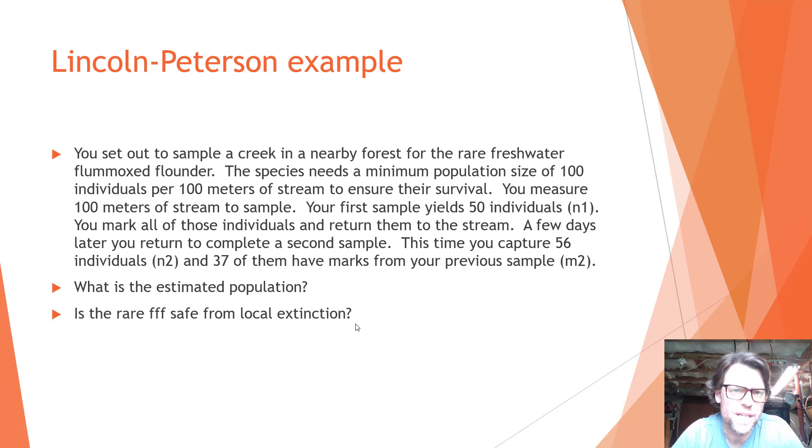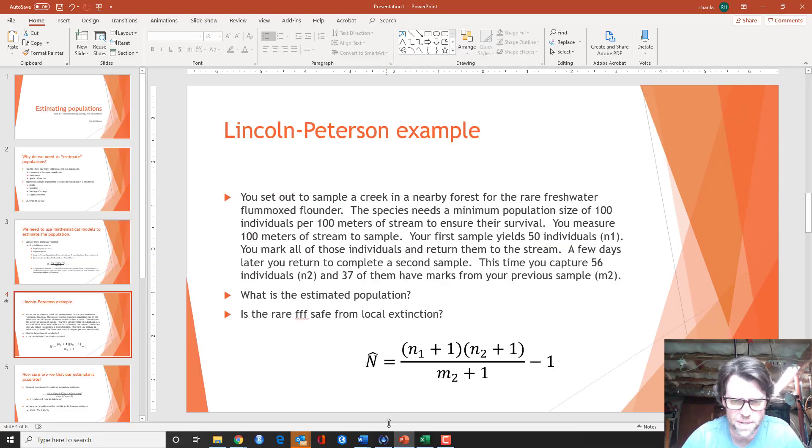All right, so let's have an example. Let's say that you set out to sample a creek in a nearby forest for the rare freshwater flummoxed flounder. This species needs a minimum population size of 100 individuals per 100 meters of stream to ensure their survival. You measure 100 meters of stream to sample. Your first sample yields 50 individuals, and that's your n1. You mark all of those individuals and return them to the stream. A few days later, you return to the stream to complete the second sample. This time you capture 56 individuals. That's your n2. And 37 of those have marks from your previous sample. That's m2. So what is the estimated population and is the rare freshwater flummoxed flounder safe from local extinction? So let's take a look at an Excel example. I did this in Excel just to make it a little easier.